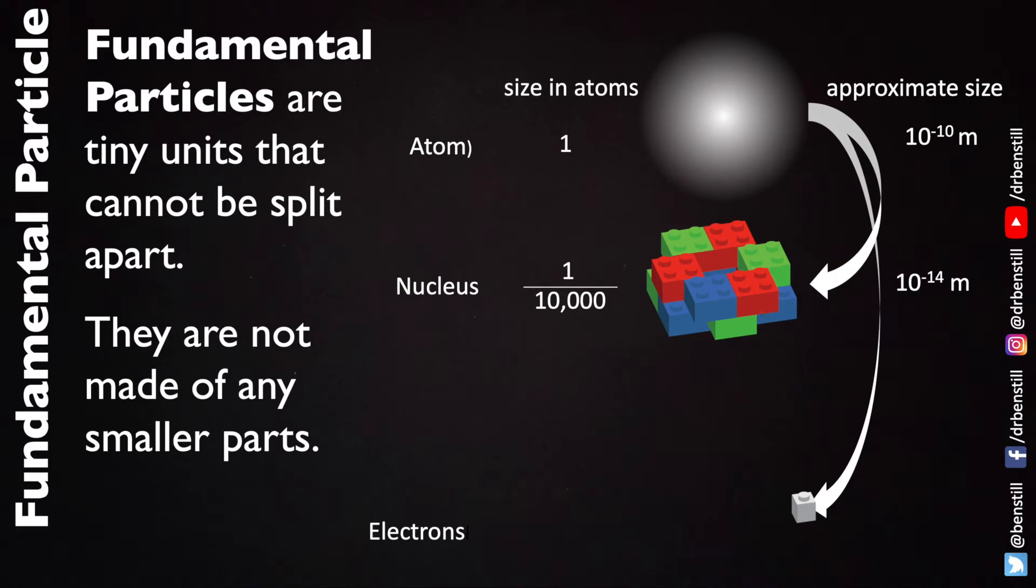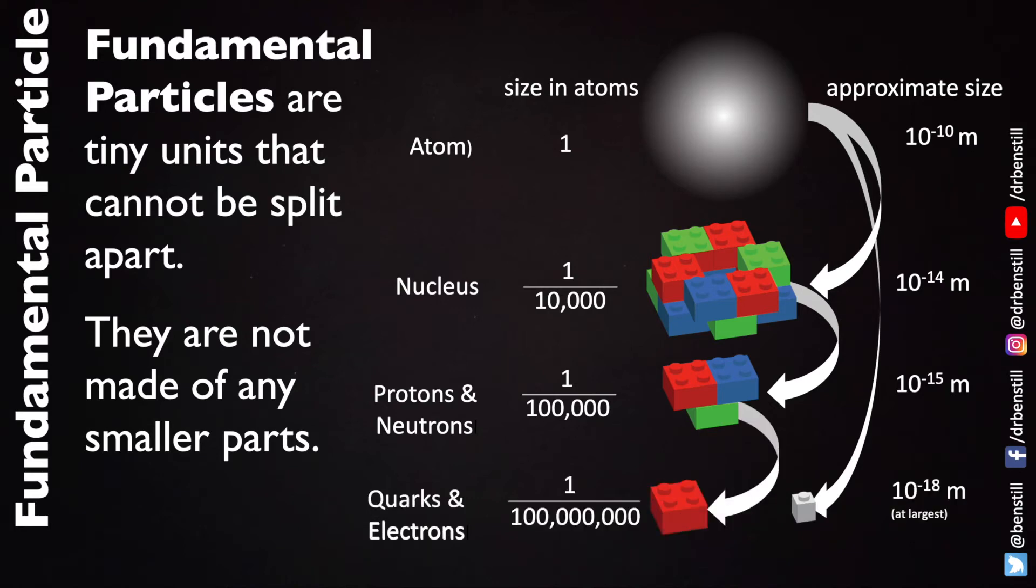It was then discovered that the nucleus itself was made of other things. Nucleons, things called protons and neutrons. These protons and neutrons were discovered to also be made of smaller things still, particles called quarks.